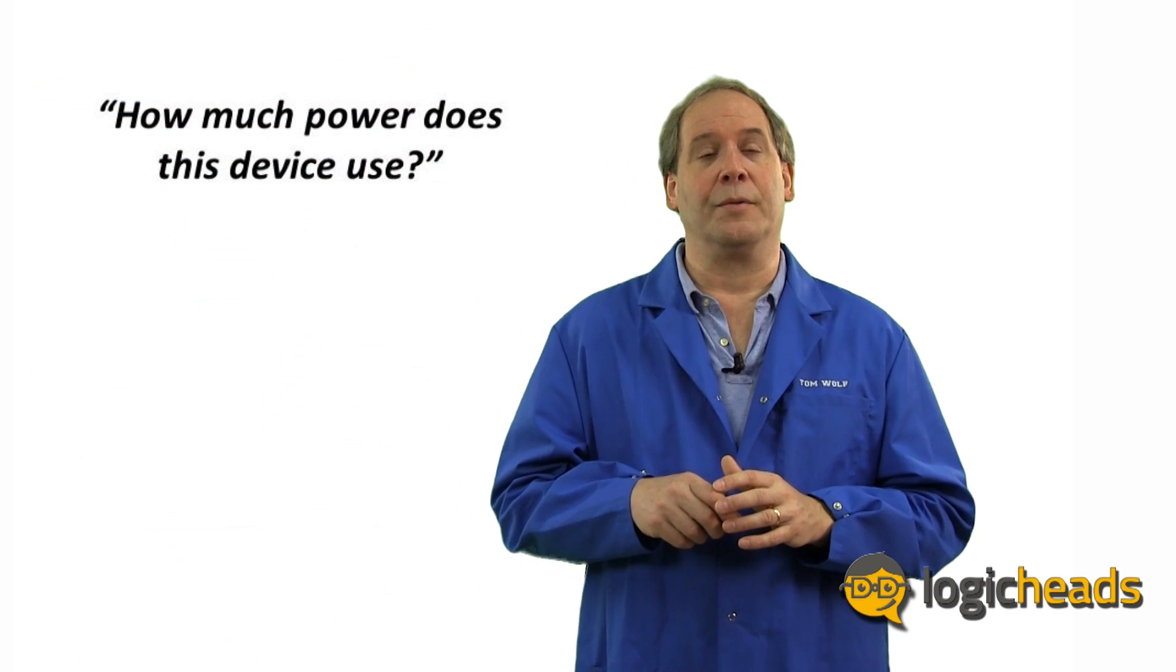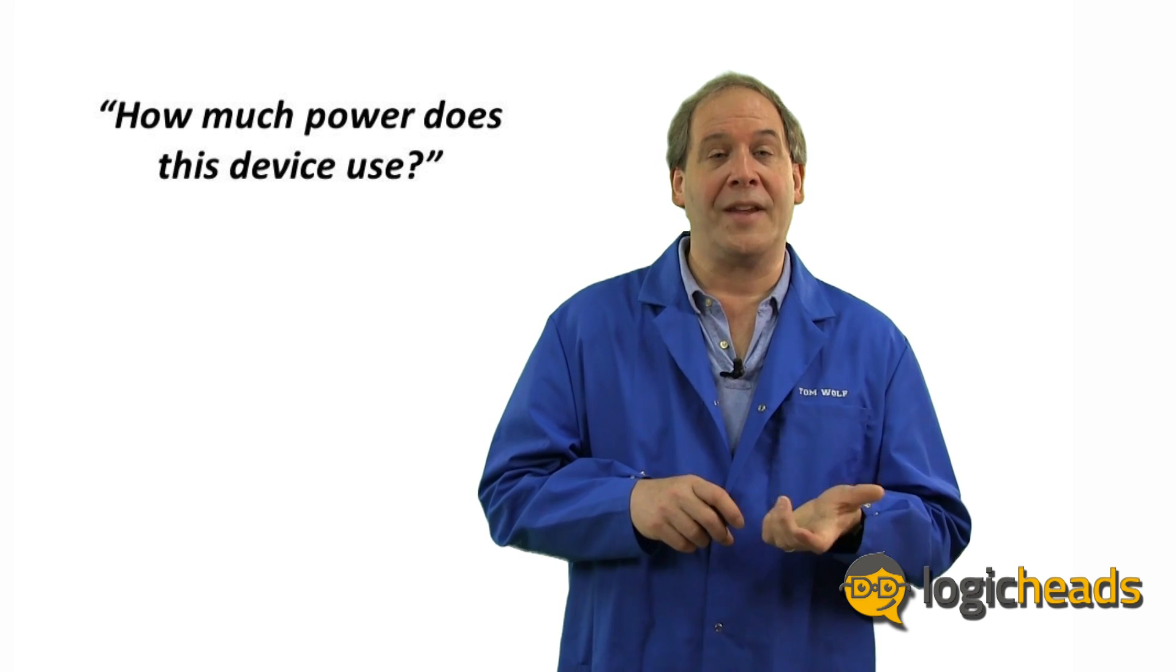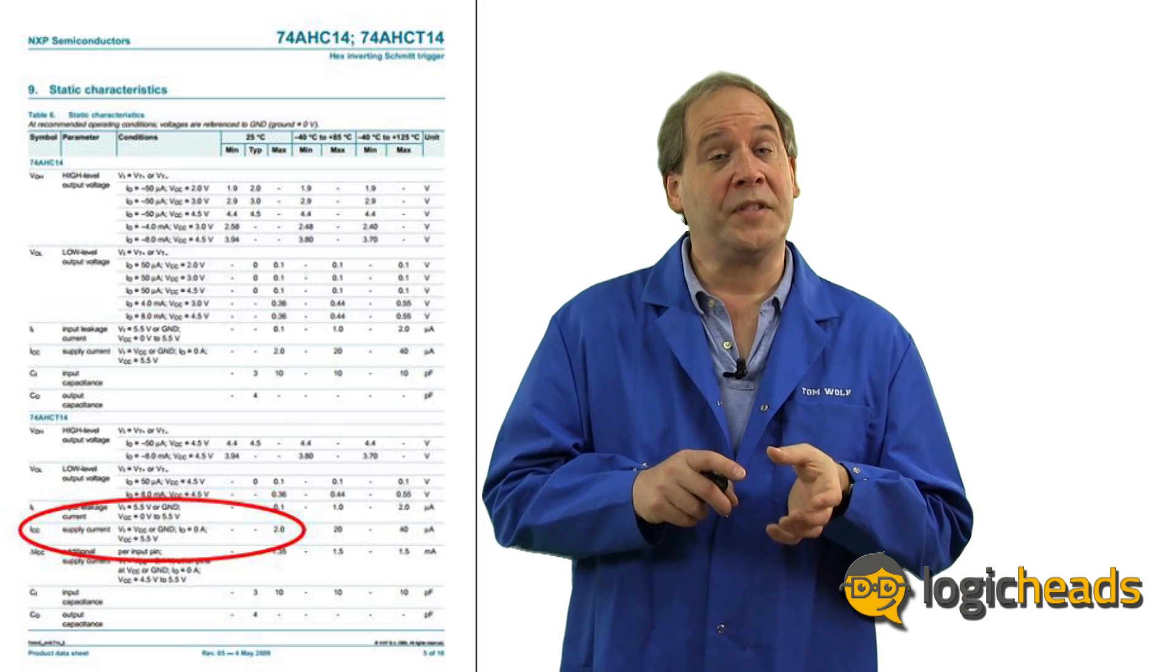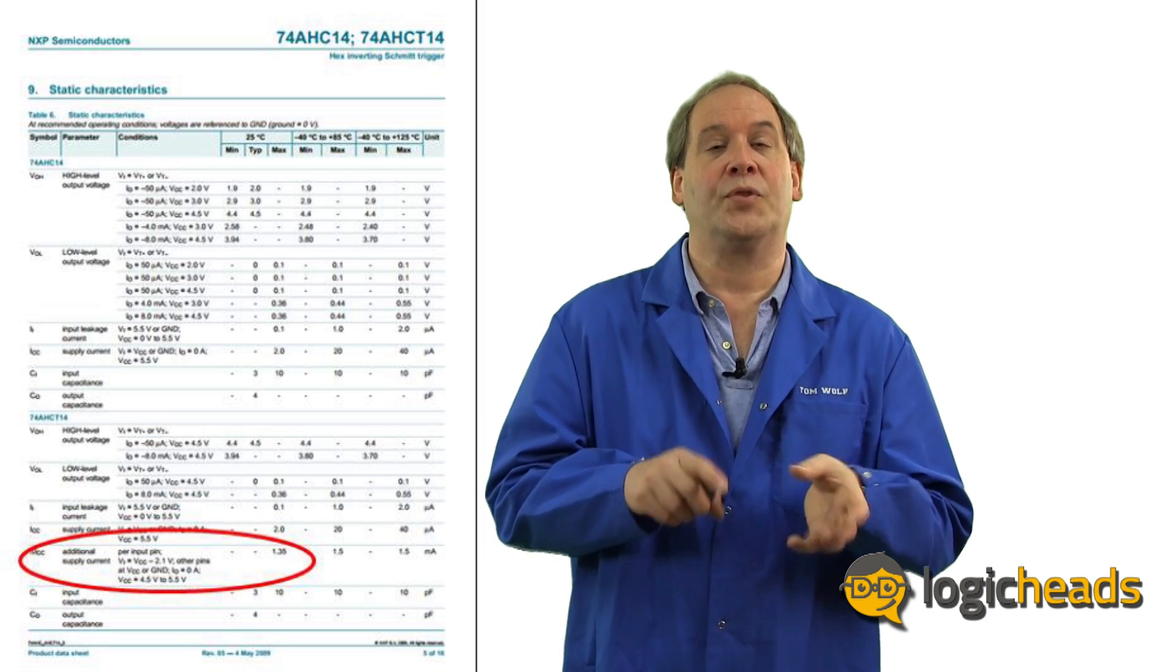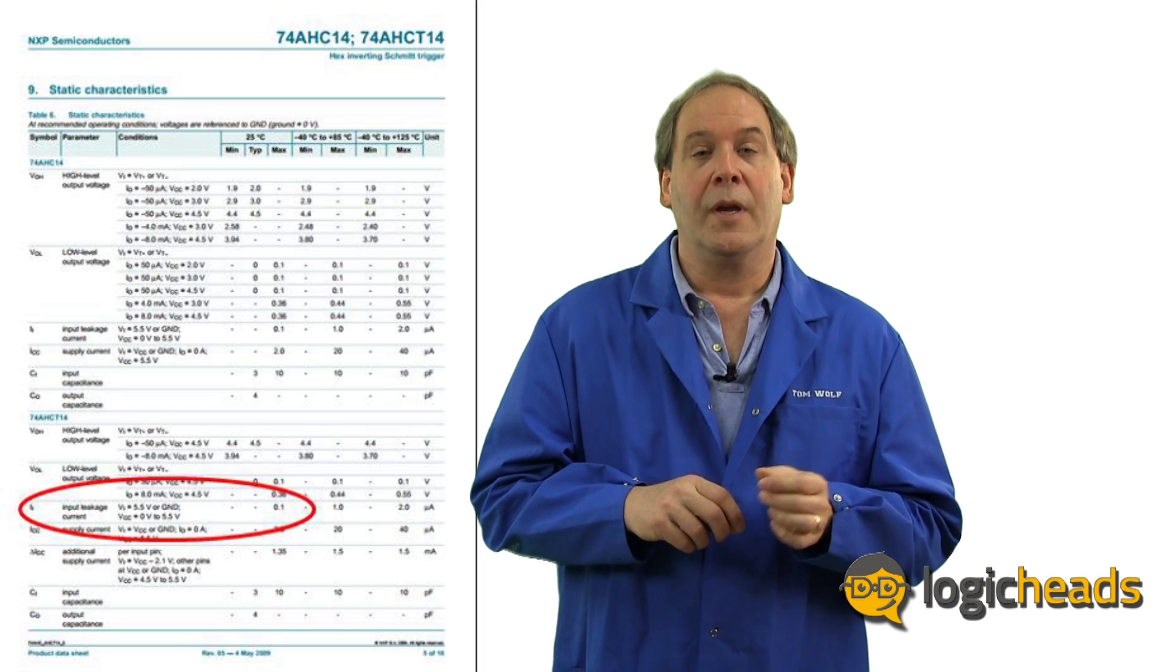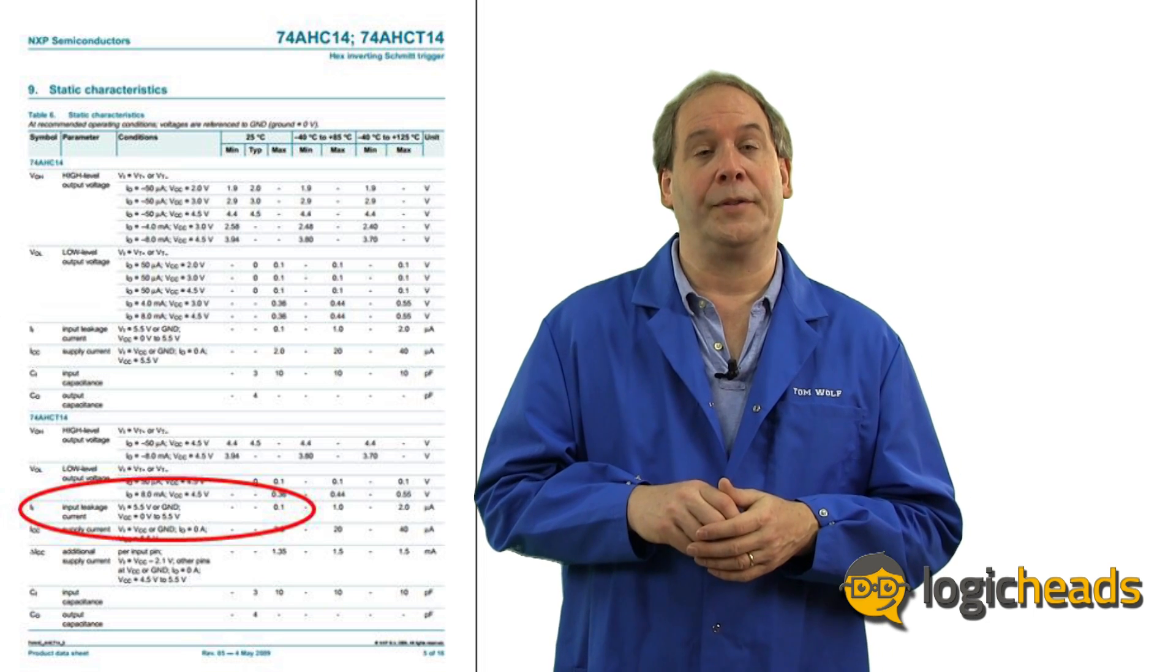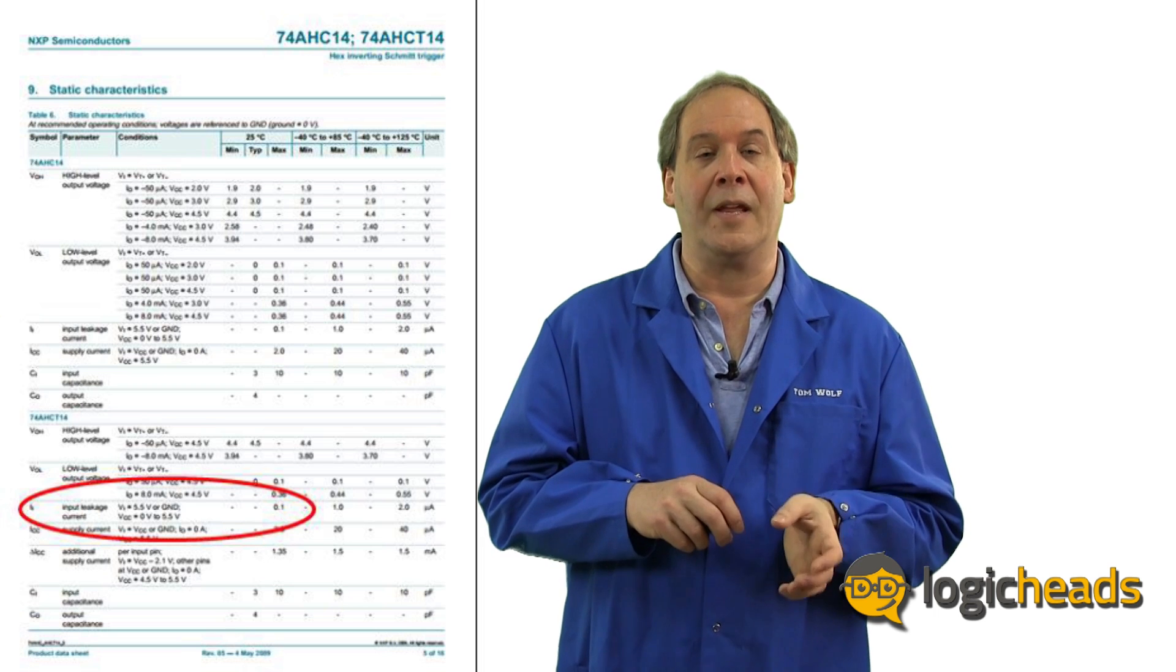How much power does this device use? Often it's important to know exactly how much power a device will use. This can be found from the values of ICC, which is the base amount of current that the device needs. However, the inputs also impact the total amount of power consumed. And this is reflected in the delta ICC, which tells you how much additional power is needed if an input pin is driven lower than VCC, your supply rail. IL is the input leakage current. This is how much current the device uses due to the current flowing into the input pins when the device is powered off. So it's useful for standby power calculations.